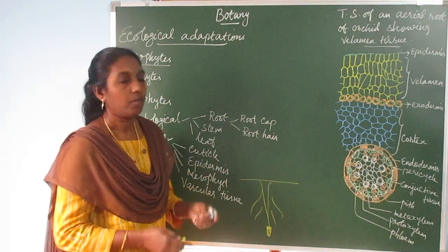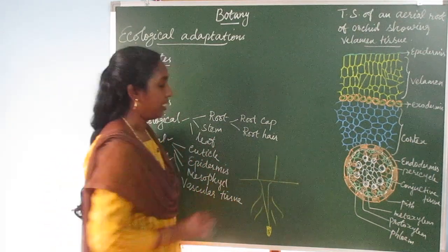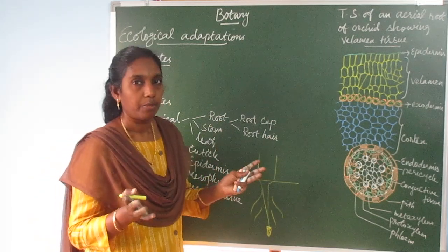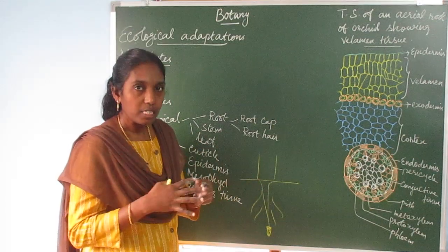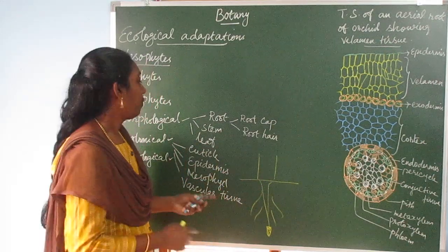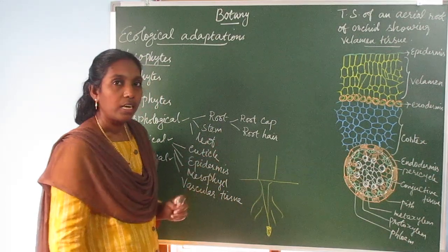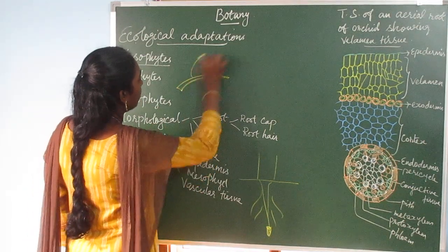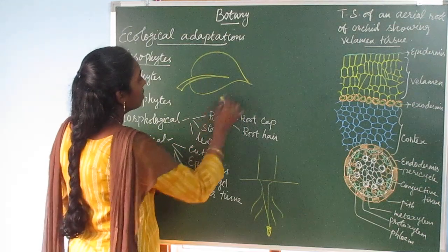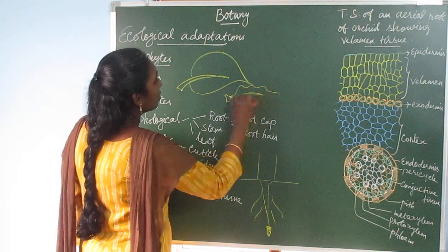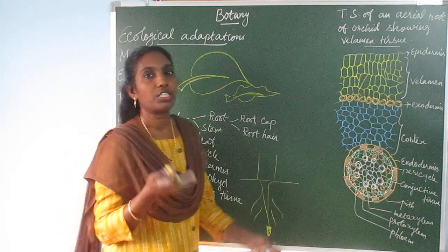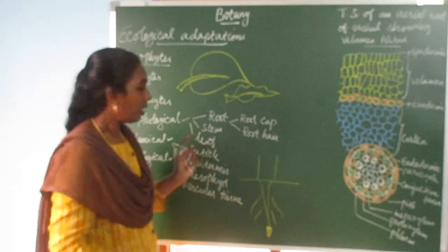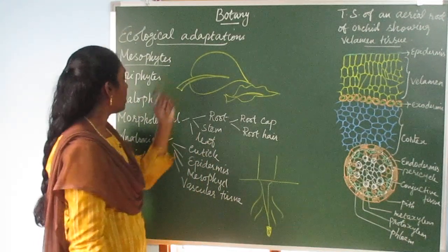The stem is the aerial part of the plant and is highly branched in mesophytes. Regarding the leaf, there are different shapes of leaves in mesophytic plants — various shapes which are broad and long. These broad leaves are present in mesophytes.